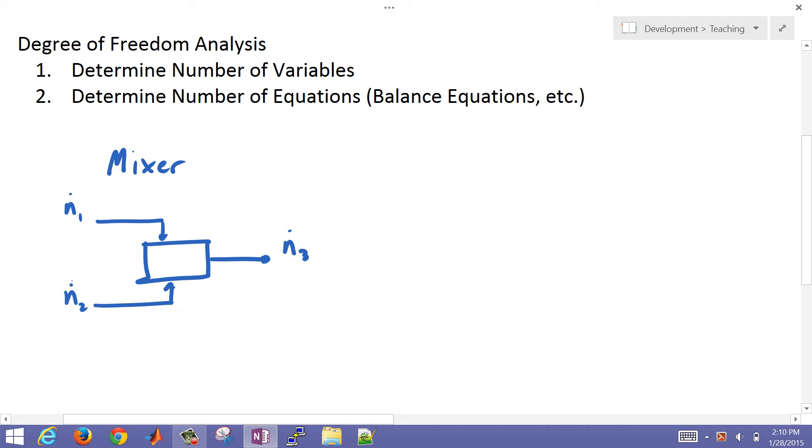Now let's say we just have two components, and we can write a mole fraction of A and B. So we have A and B in stream 1, and then we also have A and B in stream 2, and then A and B in stream 3.